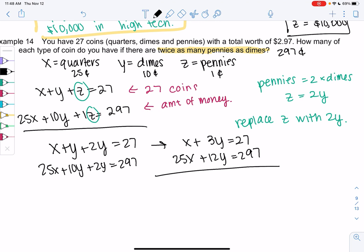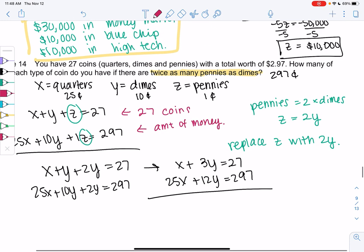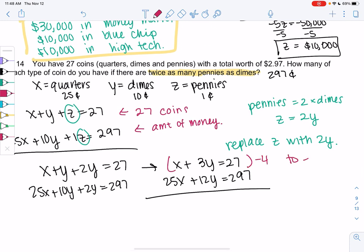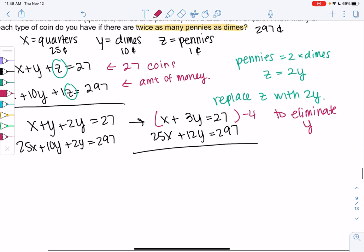And now you can eliminate either X or Y, your choice. I think I'm going to eliminate Y just because I have to multiply by a smaller number. For X, we would multiply by negative 25. I don't want to deal with huge numbers, so I'm going to multiply by negative 4 to eliminate Y. 3 times negative 4 will get me negative 12, and those Y's will eliminate. So negative 4X minus 12Y equals negative 108. And then I haven't touched the second one.